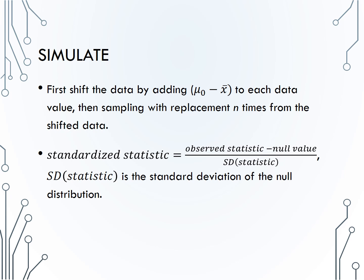Therefore, bootstrap resampling from the shifted data will allow us to create many samples from a bootstrap distribution with mean equal to the null value and standard deviation approximately the same as the population standard deviation, assuming that the original sample is in fact representative of the population. In short, to simulate a null distribution for a single mean, we will first shift the data by adding mu-naught minus x-bar to each data value, then sample with replacement n, our sample size, times from the shifted data.